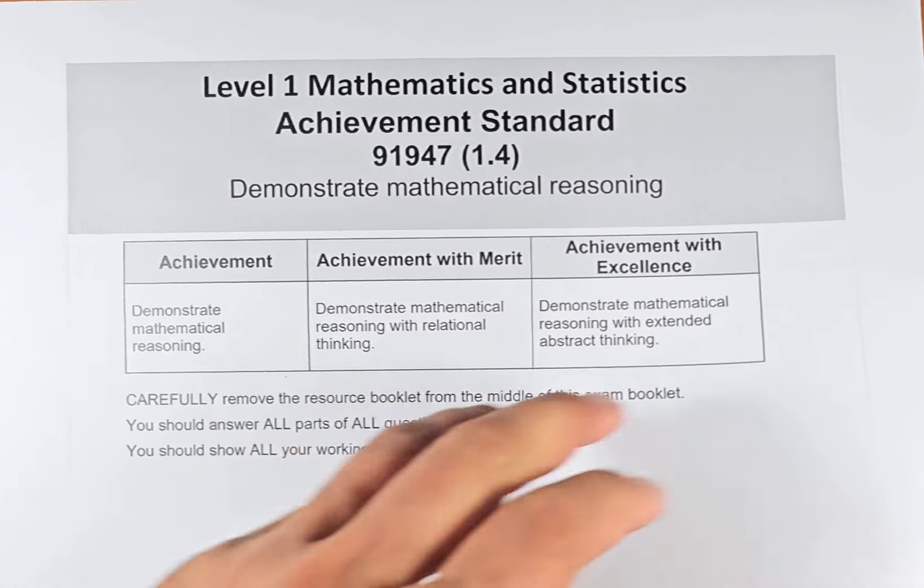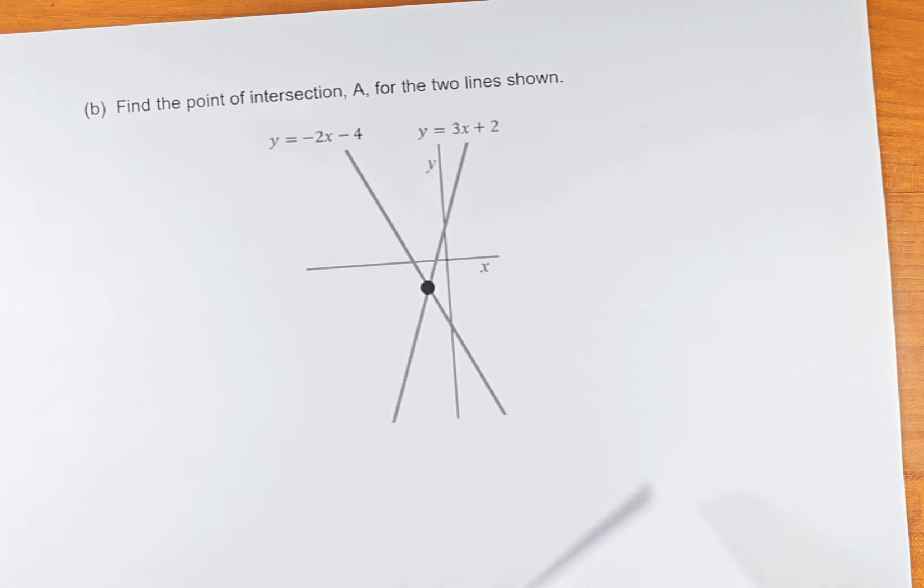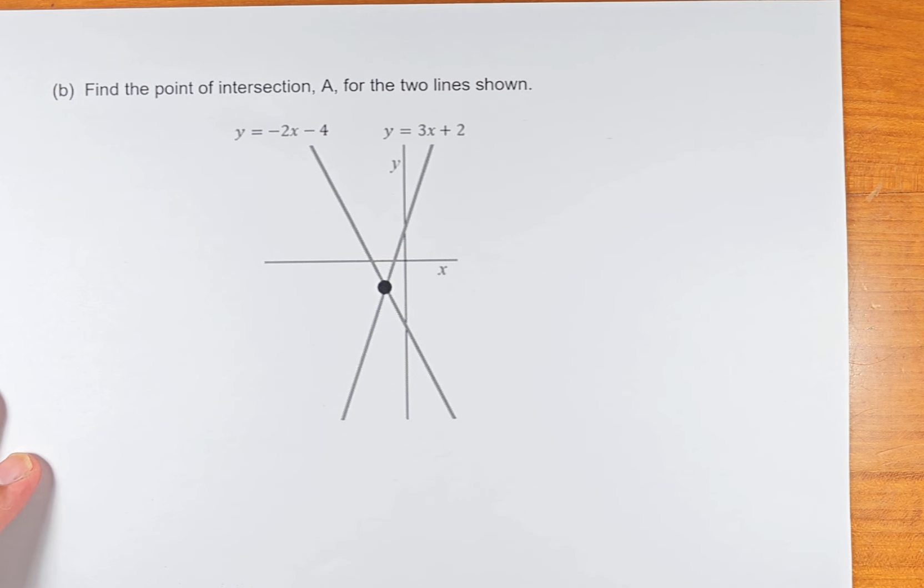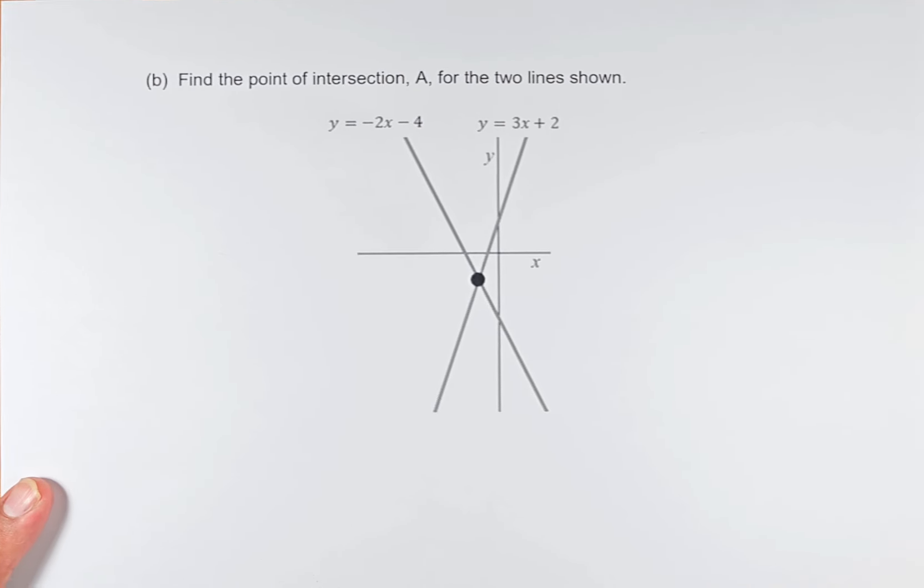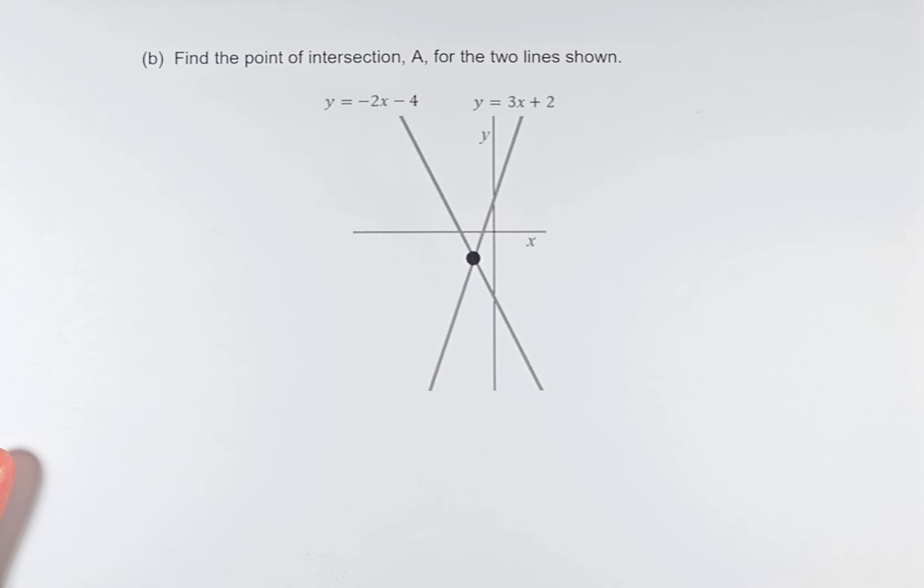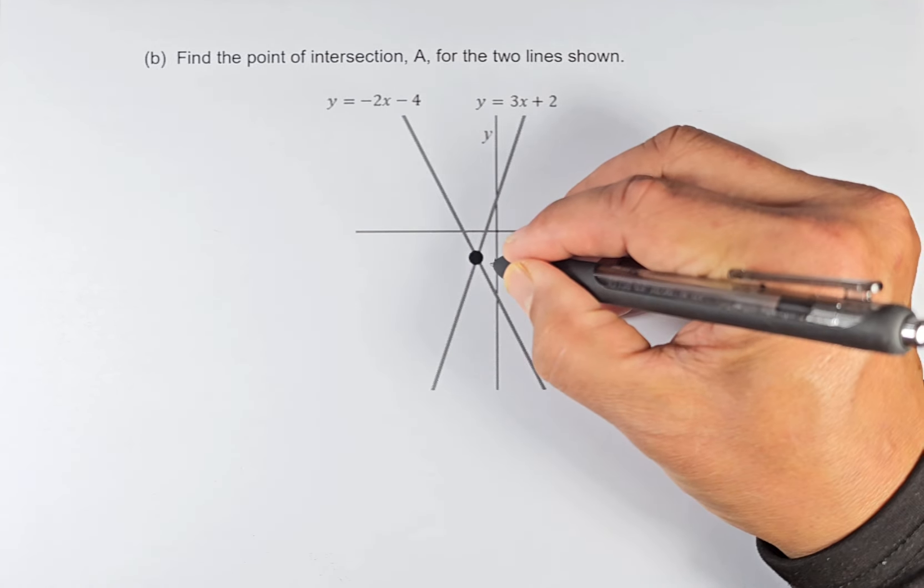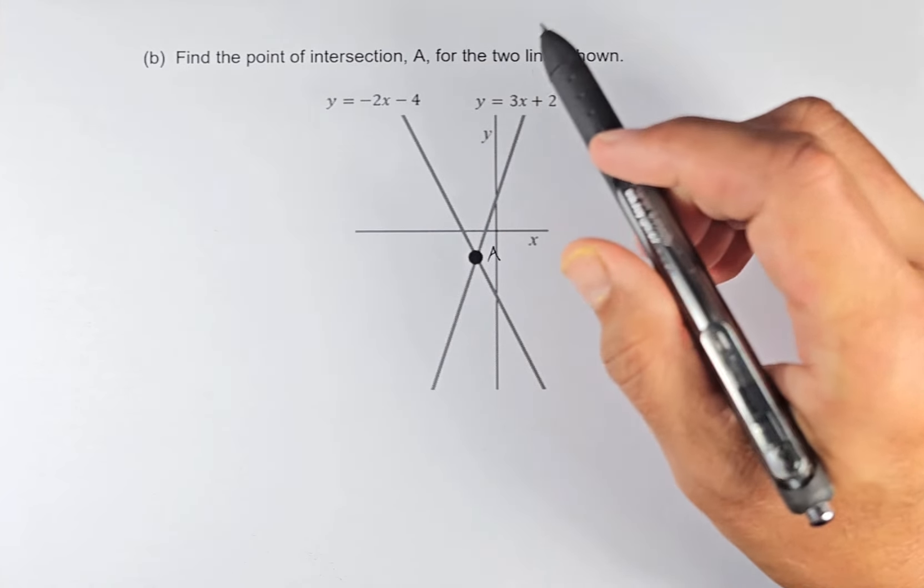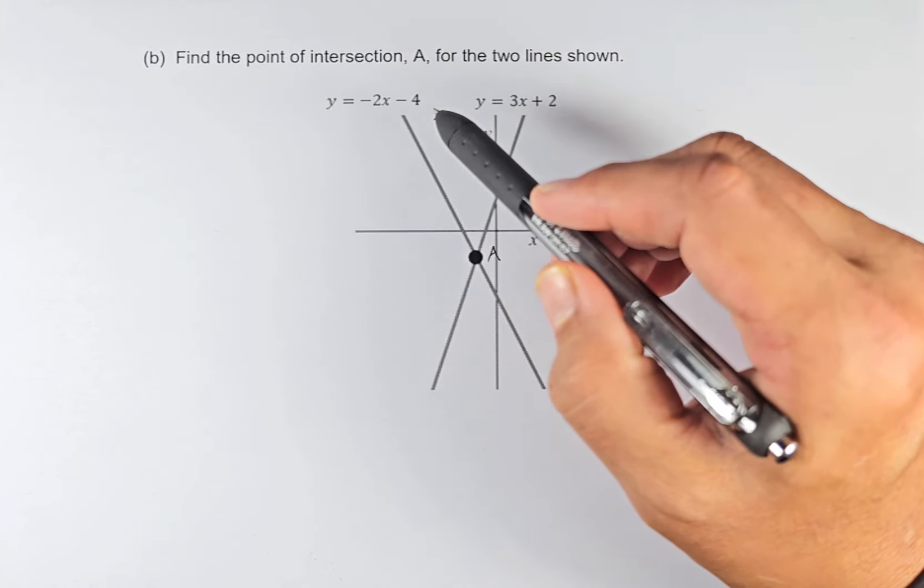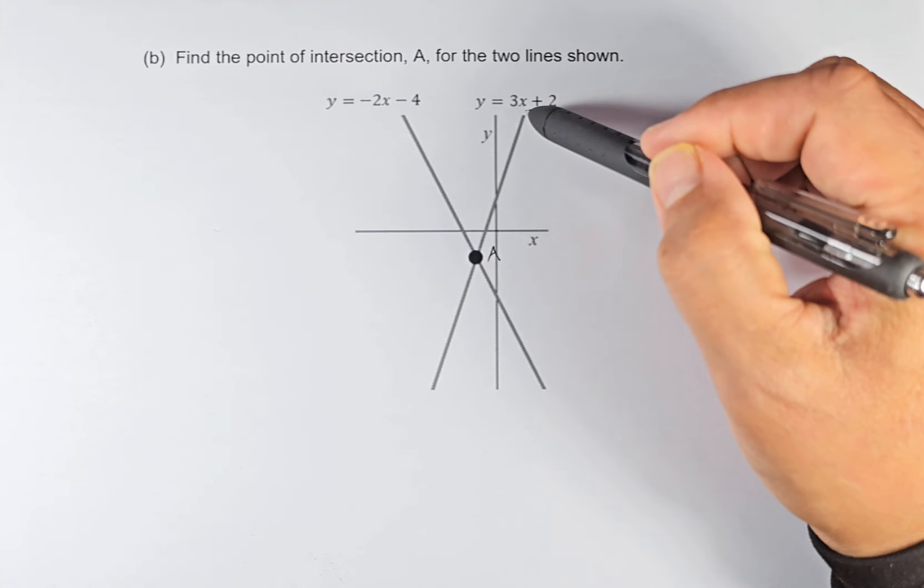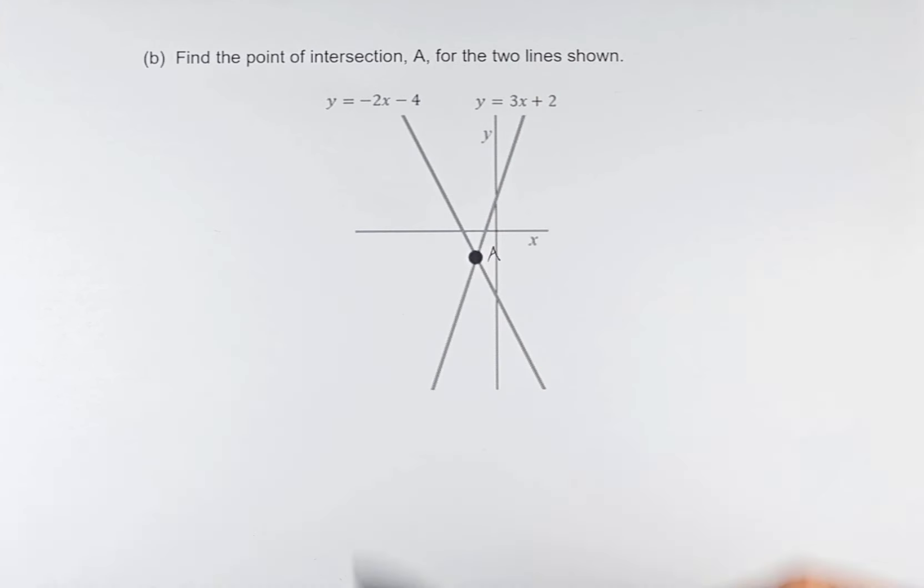Question 2b is a merit question and we will solve it. The question asks: find the point of intersection A for the two lines shown below. y equals -2x - 4 in this line, and y equals 3x + 2. In fact, it was in two different colors for better understanding and clarification, but we're going to solve this without the color paper.